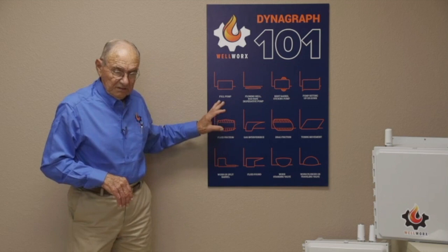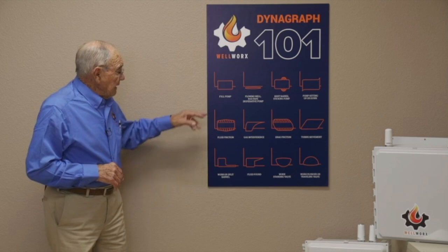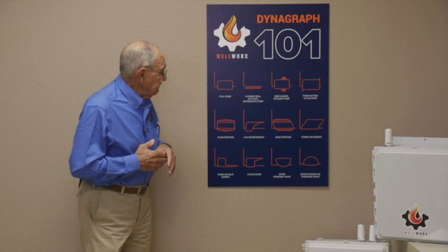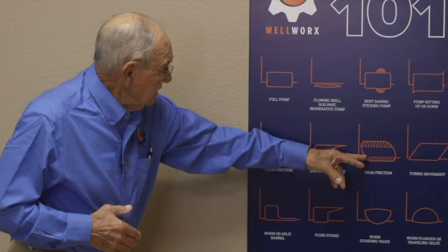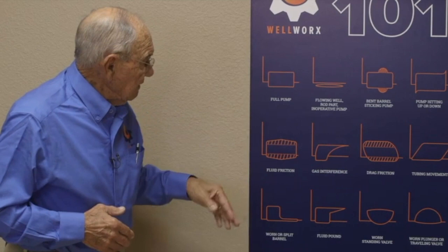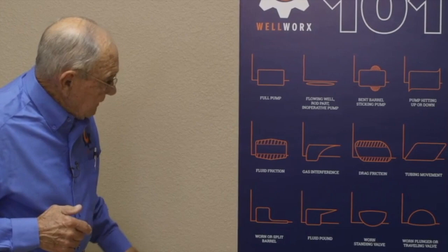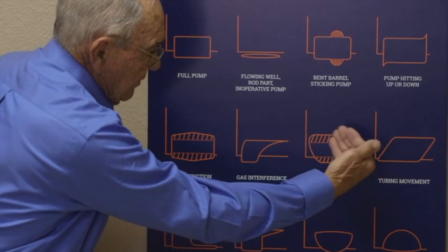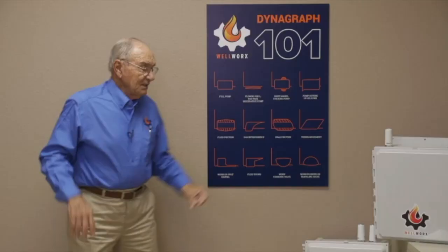All these different conditions can have two or more existing simultaneously, and what they do is overlay. For example, you can have a lot of friction and it could be a full pump. Or here's a big one: you can have unanchored tubing and bad friction. The card leans one way with unanchored tubing and the other way with friction, and they superimpose. So you put them both together and you kind of have a rectangular card.